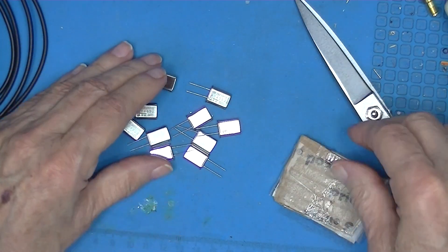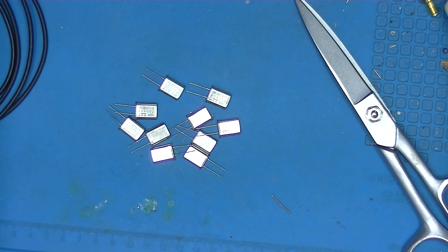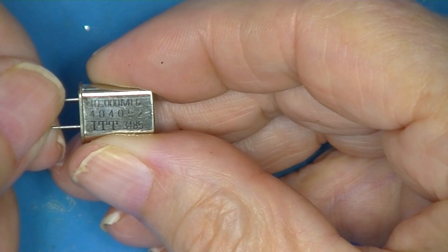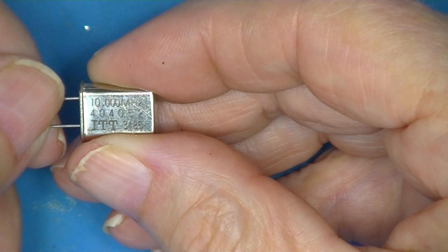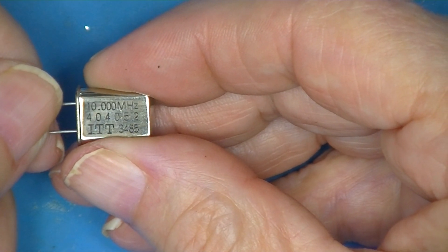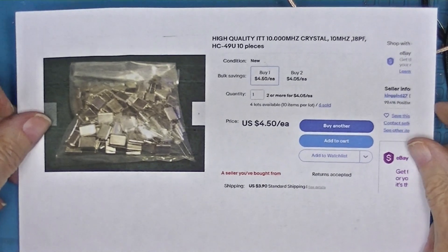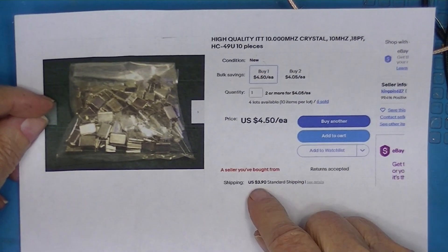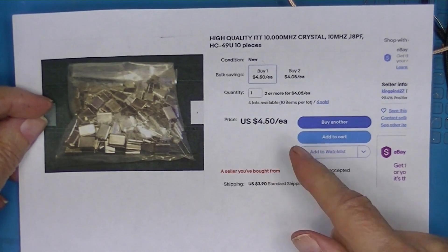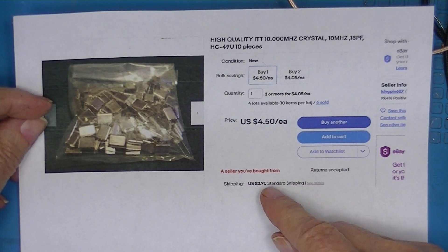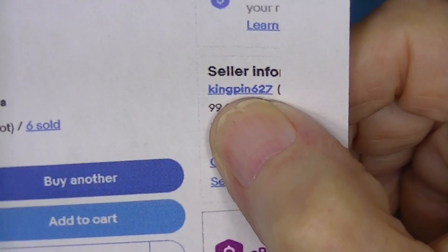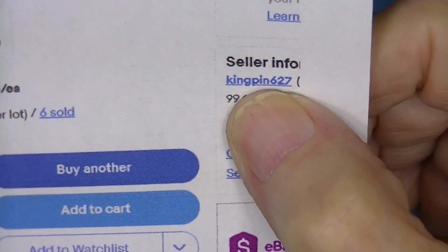One of the things I had on order were some 10 megahertz crystals, and these are marked 10 megahertz ITT. These are the 10 megahertz ITT crystals, 75 cents apiece, maybe a fraction more. The seller was kingpin 627.